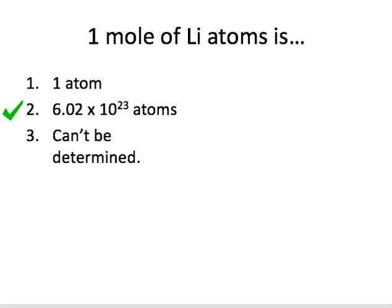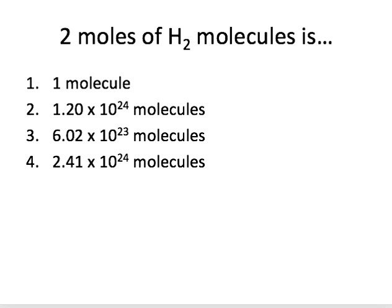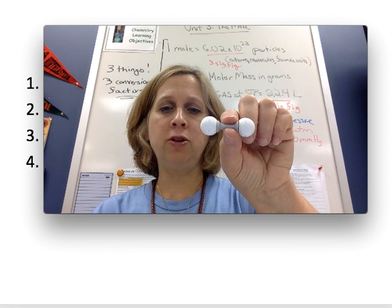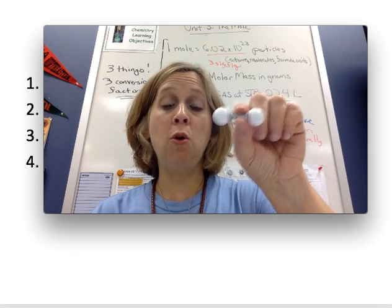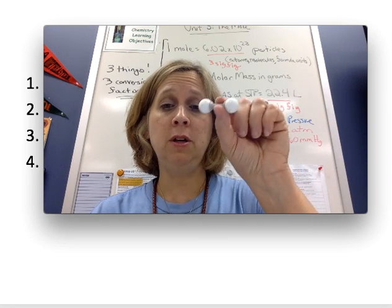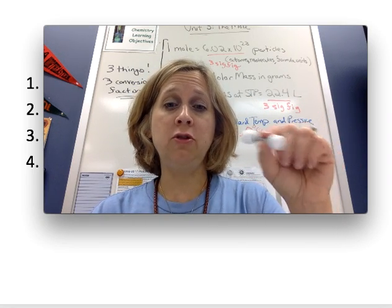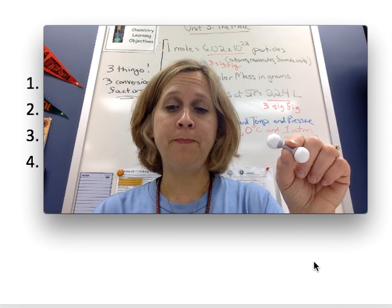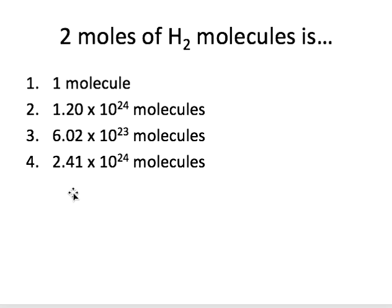We can also use moles for counting other small particles like molecules. So if I had two moles of H2 molecules, I'd have twice as many — two times 6.02, just like if I had two dozen of something I'd have two times 12. When you put it into your calculator you're just doing a multiplication. So 2 times 6.02 times 10 to the 23rd gives you 1.20 times 10 to the 24th, to three significant digits.